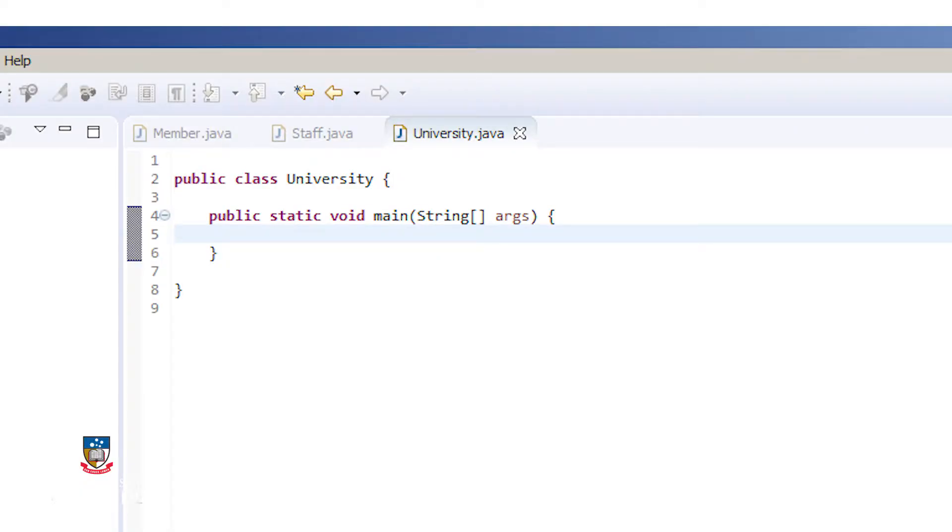To create an instance of our inherited object, I need another class with a main function. I can do this like so. Now, let's create a university member of type staff. I create a member object, but I create it as a new staff member. If you recall from before, this will call the staff constructor, which then calls the member constructor.